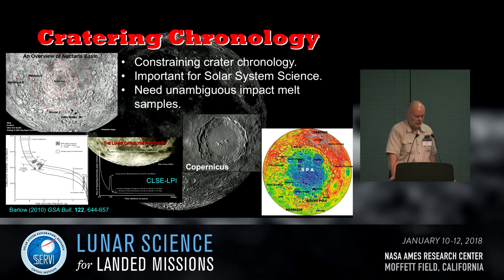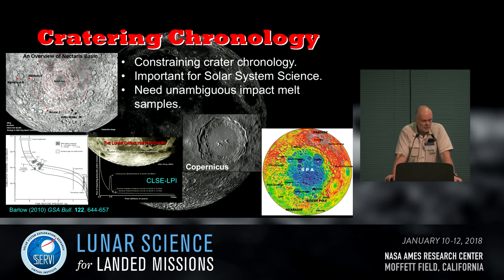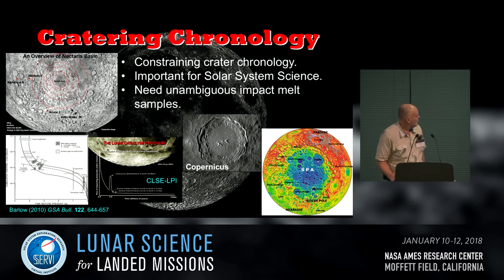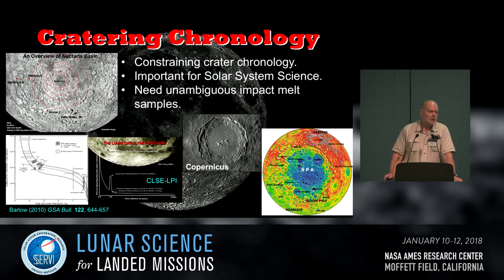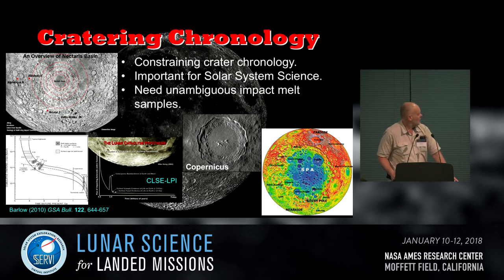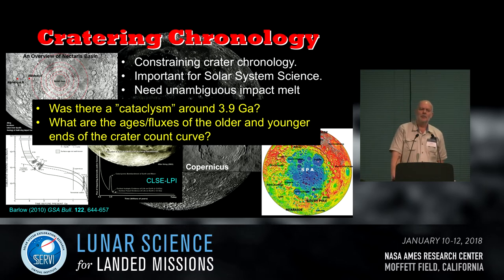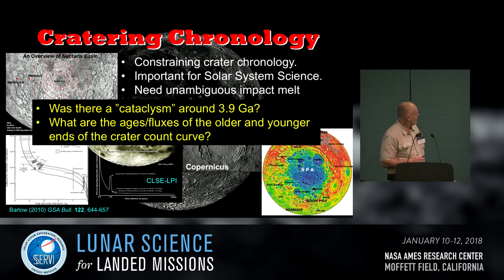Cratering chronology becomes important because we've used Apollo samples to constrain a small portion of the crater count curve for the inner solar system. There's a debate about whether there was a cataclysm. We need impact melts from known craters to constrain this crater curve because we're applying it to places such as Mercury and Mars, and we need to get it right. We don't have samples from Mercury; we have a few meteorite samples from Mars. The Moon is the linchpin to understand the impact history of the inner solar system, and we need unambiguous samples of impact melt from basins, especially South Pole-Aitken.